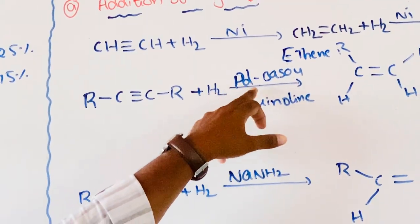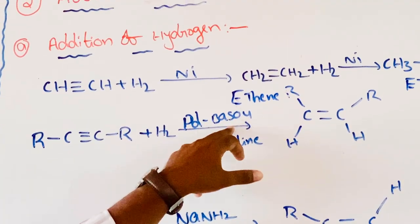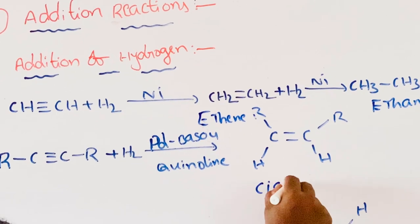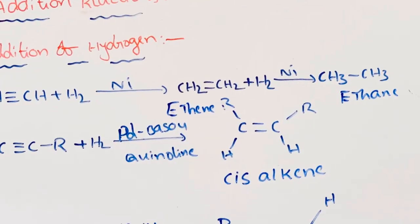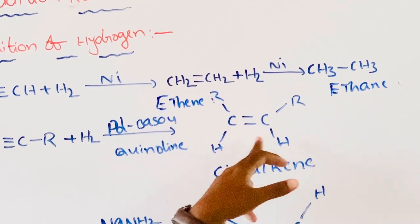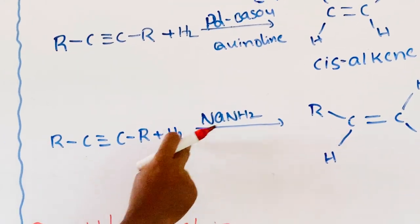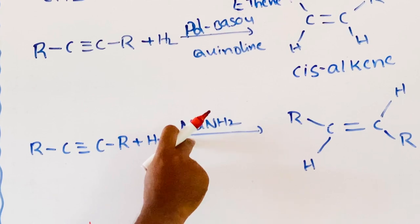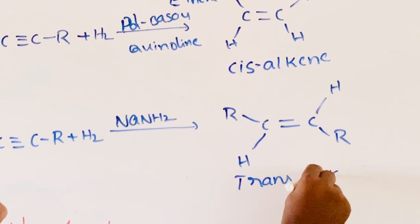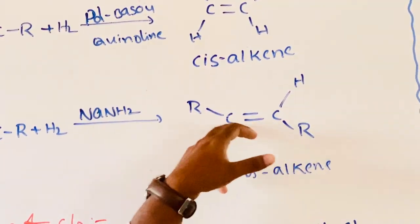Alkynes undergo hydrogenation in the presence of Lindlar catalyst. What is Lindlar catalyst? It is a mixture of palladium and barium sulphate, called Lindlar catalyst. In the presence of quinoline, it gives cis-alkenes. What is cis-alkenes? The atoms or groups of the molecule on the same side of the double bond are called cis-alkenes. Alkynes hydrogenation in the presence of sodium and liquid ammonia gives trans-alkenes. Atoms or groups of the molecule on the opposite side of the double bond are called trans-alkenes.